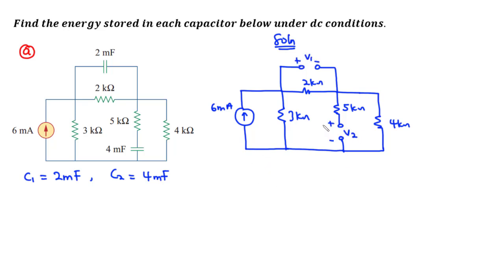This is how the circuit looks after replacing each of the capacitors with an open circuit. We have this to be V1 and this to be V2. Our interest is first to find the voltage across each of the capacitors.